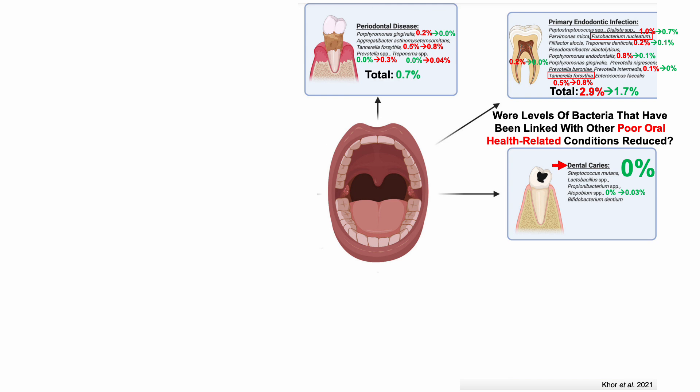For periodontal disease bacteria: test one was 0.7%, but test two actually went in the wrong direction at 1.2%. Notably, Tannerella forsythia alone accounts for 0.8% of that 1.2%.